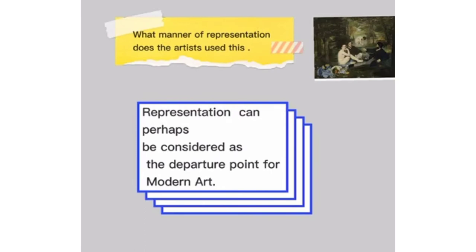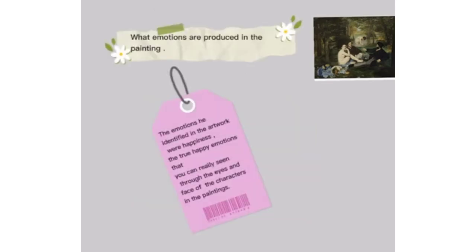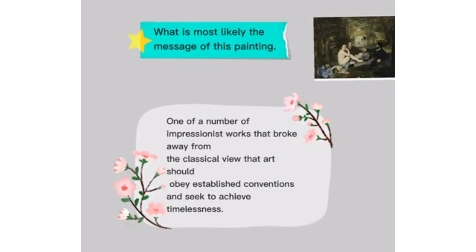What manner of representation does the artist use? Representation can perhaps be considered a departure point for modern art. What emotions are produced in the painting? The emotion identified in the artwork is happiness — true happiness that can really be seen through the eyes and faces of the characters in the painting. The painting is one of a number of Impressionist works that broke away from the classical view that art should obey established conventions and seeks to achieve timelessness.